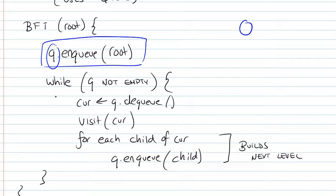Then we have that same condition. While the queue is not empty, we're going to dequeue whatever is there, and it happens to be the root in the first instance. We're going to visit that root, and then for each child of that current node, which happens to be the root, we're going to enqueue all of its children into the queue.